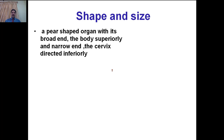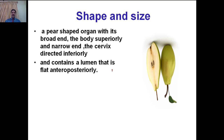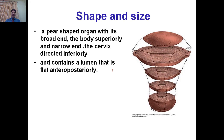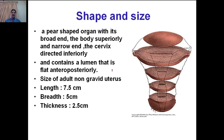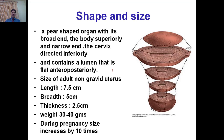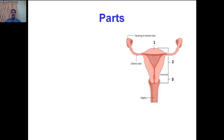The uterus is a pear-shaped organ with a broad end of the body superiorly and a narrow end of the cervix directed inferiorly, containing a lumen that is flattened anteroposteriorly. The size of an adult non-gravid uterus: length is 7.5 cm, breadth 5 cm, anteroposterior diameter is 2.5 cm, and it weighs between 30 and 40 grams. During pregnancy, the size of the uterus increases about 10 times.